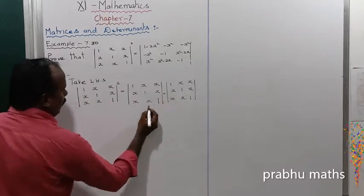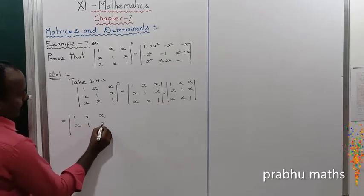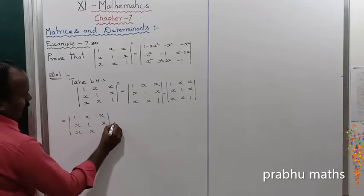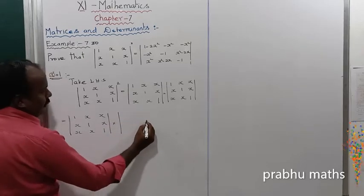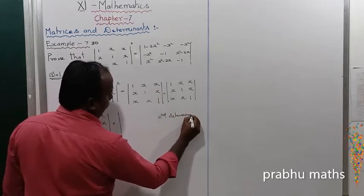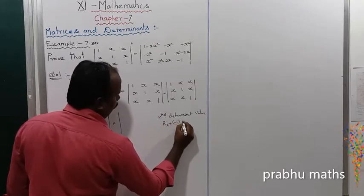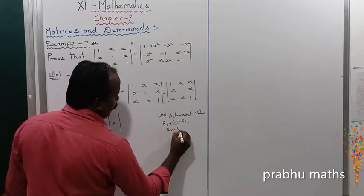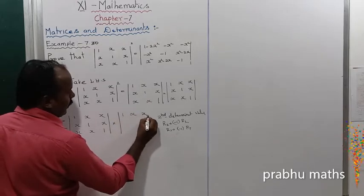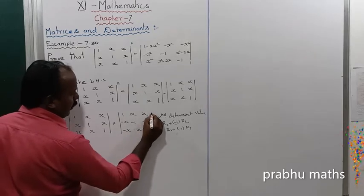So next, that is equal to determinant of [1,x,x; x,1,x; x,x,1] into the second determinant value. Applying row operations: R2 tends to minus 1 into R2, R3 tends to minus 1 into R3.